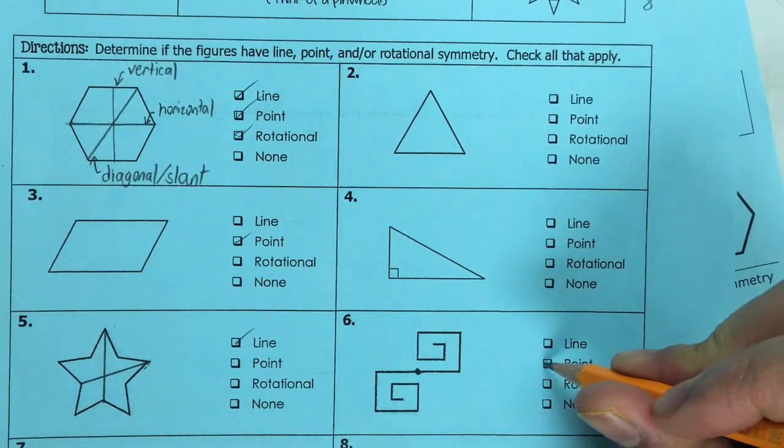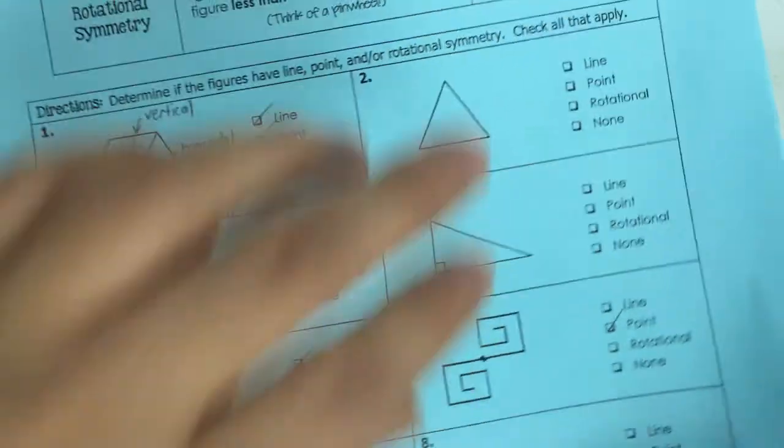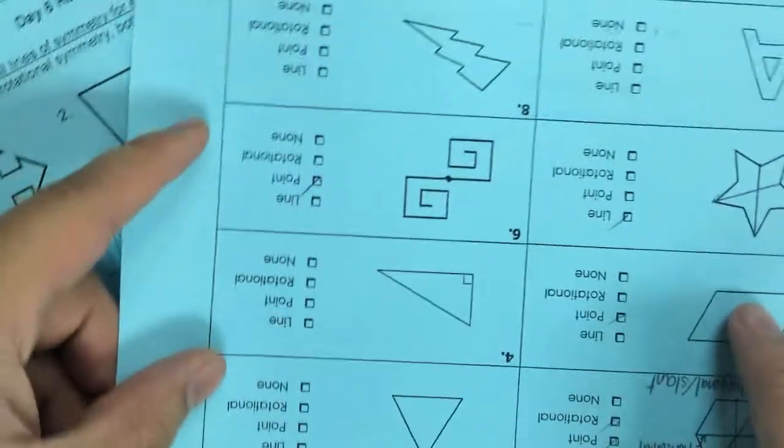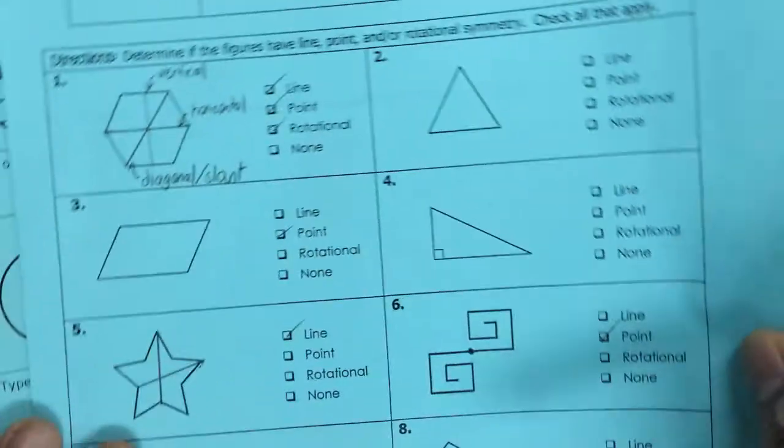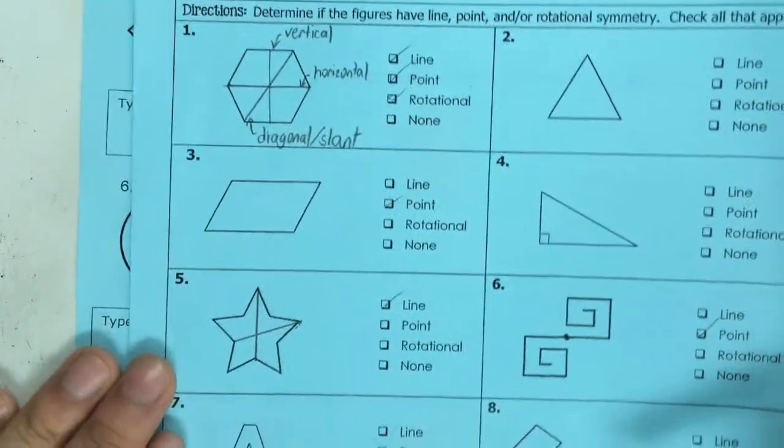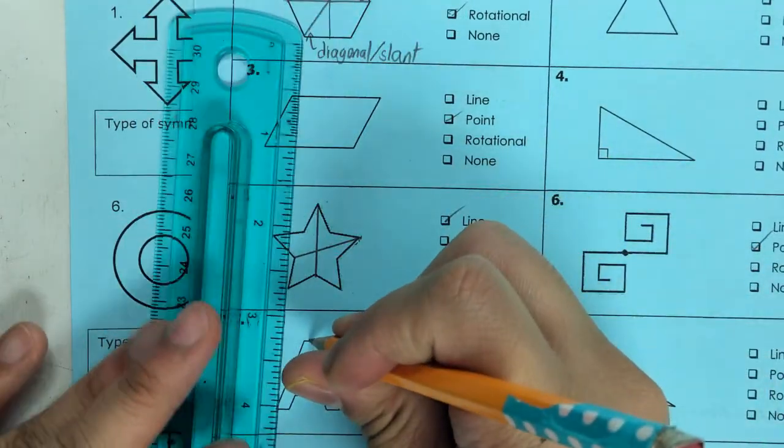This weird shape has point symmetry. It looks the same upside down. Let me flip my paper upside down. Sometimes you can also look at symmetries for letters. Letter A has symmetry down the line.